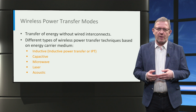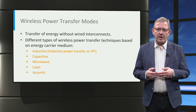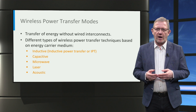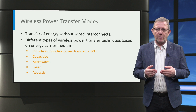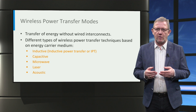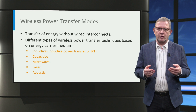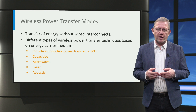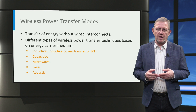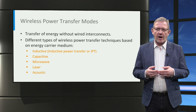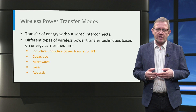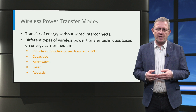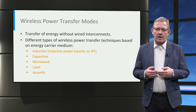On the other hand, capacitive power transfer relies on oscillating electric fields at frequencies of 100 kilohertz to megahertz. Typically, applications involve low powers of 1 to 50 watts with efficiencies in a range of 50 to 80 percent. Other modes of wireless power transfer include microwaves in the frequency range of 300 megahertz to 3 gigahertz, used for example in space-powered satellites. Finally, there is laser power transfer using electromagnetic radiation at very high frequency, and acoustic power transfer at frequencies in the range of 20 to 100 kilohertz.